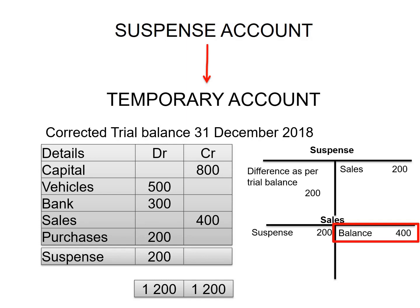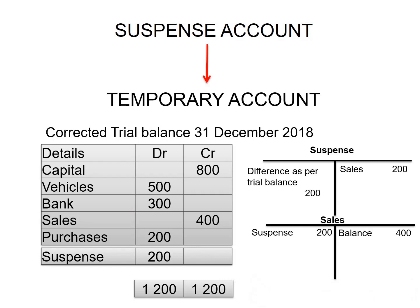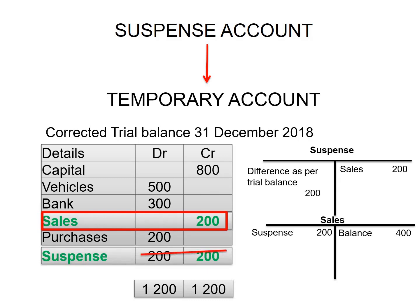In order to correct the error, we debited sales with $200, and then we credited our suspense account also with $200, in order to return the balance of the suspense account to zero. We debited sales and then credited the suspense account. After doing that, the balance for sales changed — $400 less $200 gives $200. Therefore, we need to change the balance of our sales account from $400 to $200, and since we credited our suspense account, it will return to zero. We then have a new total for our trial balance of $1000.